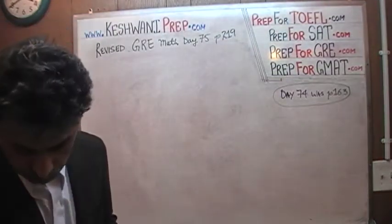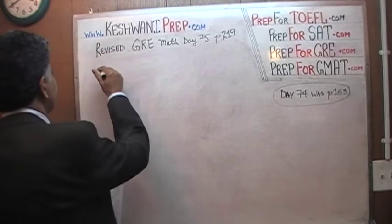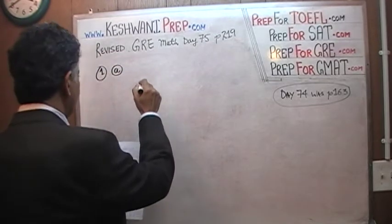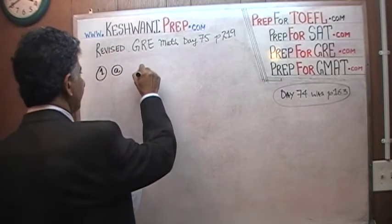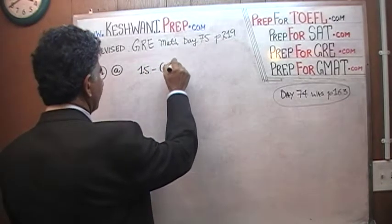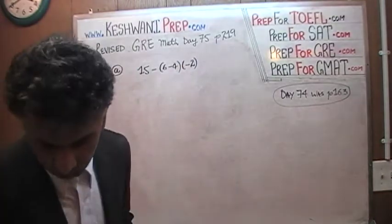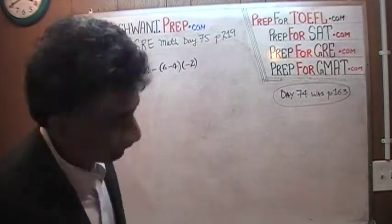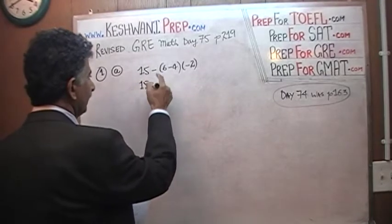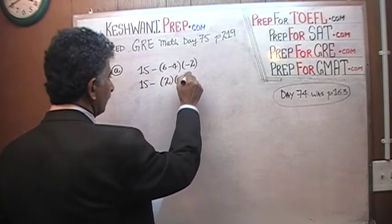Number 1, question A. It says 15 minus 6 minus 4 times negative 2 times negative 2. So this is just 15 minus 6 minus 2, which is 2 times negative 2.